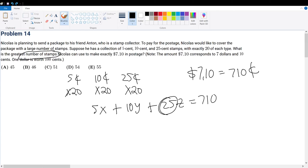So to do this, let's first maximize 5x. If I want to maximize 5x, I need to maximize x. Well, the maximum number x can be is x equals 20. So when x is equal to 20, then I use up 100 cents. So 10y plus 25z must give me 610 cents.